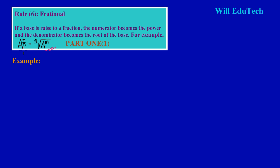Here we have an example in its general form. We have base A raised to a fraction M upon N. I have written it another way: the denominator of the fraction, which is N, becomes the root when written using a radical sign — this is called a radical, or you can say it's written in surd form. The numerator of the fraction becomes the power of the base.